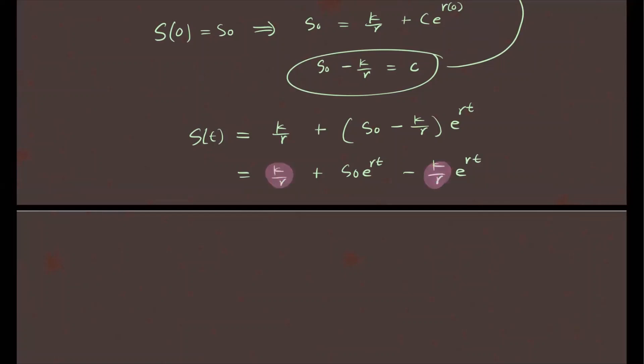So here's what this looks like. You'll have S naught e to the Rt plus, I factor out K over R times 1 minus e to the Rt. So I'm only working on these two terms to factor them. So this is my model for the function S of T. Now let's answer the problem.